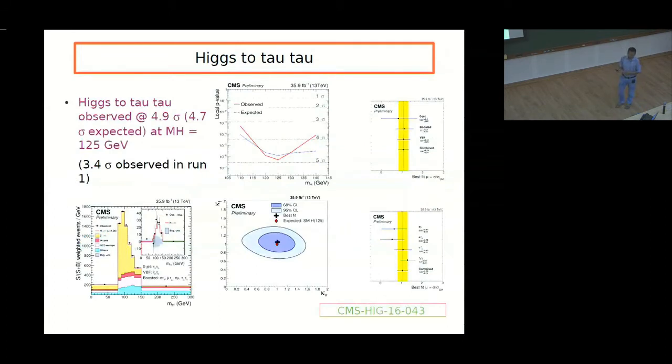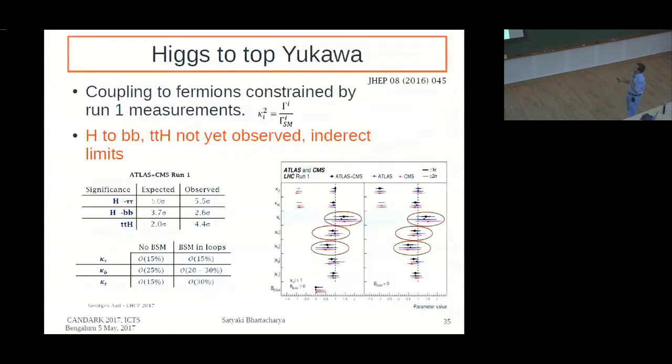Higgs to tau tau is, we have a new result of Higgs to tau tau. Higgs to tau tau, just CMS alone, has a 4.9 sigma signal observed in various decay modes of decay modes of tau. And we have also measured kappa fermion, kappa vector boson, and matches very nicely. Higgs to tau tau coupling. This was the status of combined ATLAS and CMS at the end of run one.